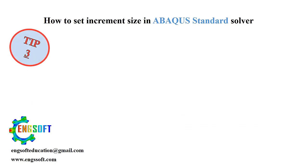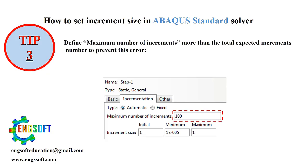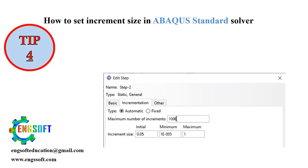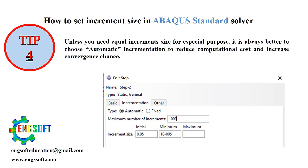Tip 3 — Maximum number of increments: Always set this value higher than the expected number of increments to avoid errors during the analysis. Tip 4 — Automatic incrementation: Unless you need equal-sized increments for a specific reason, stick with automatic incrementation. This reduces computation time and improves convergence chances.